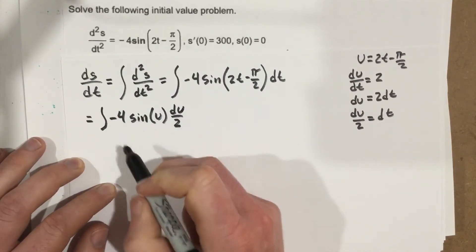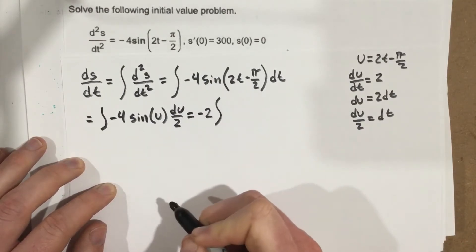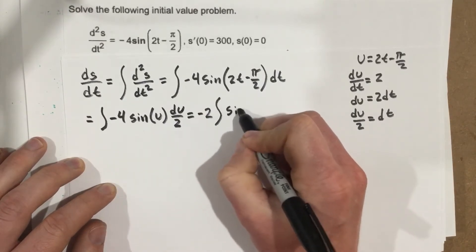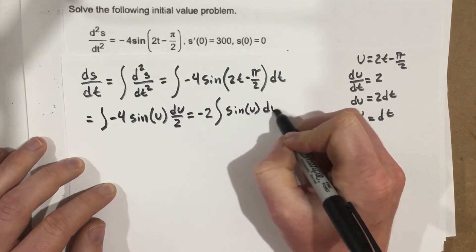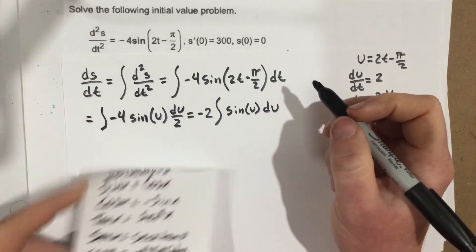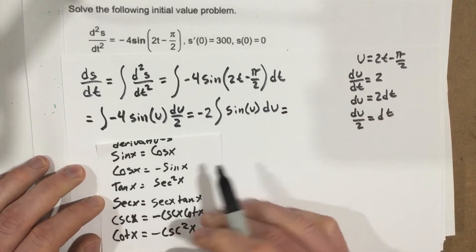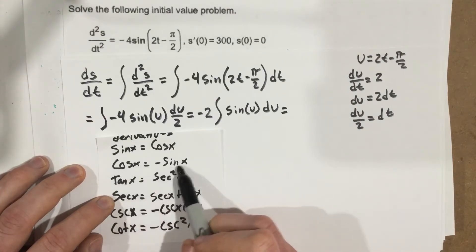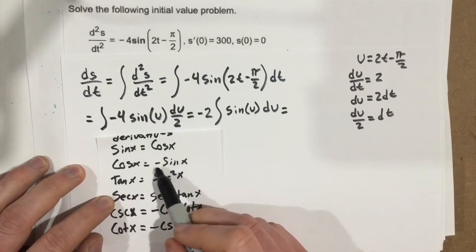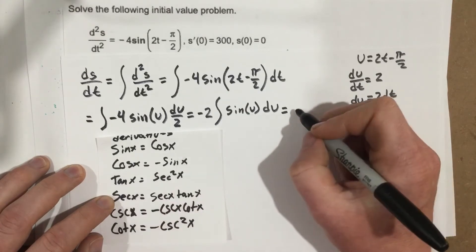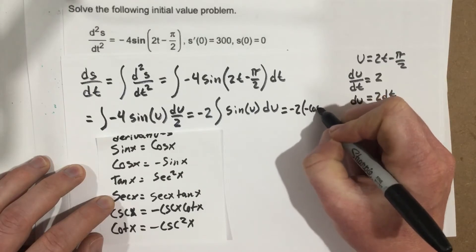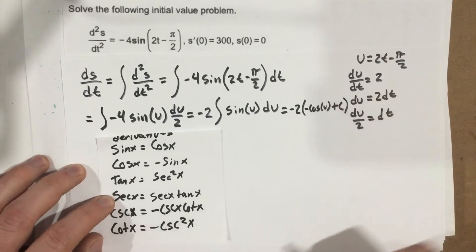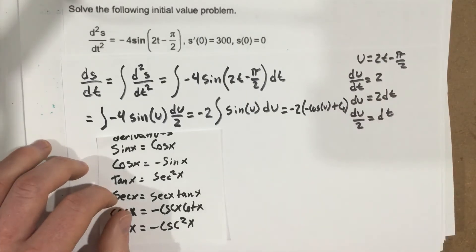The 2 in the denominator and the negative 4 combine to give negative 2, so I write that outside the integral: negative 2 times the integral of sine u du. Now integrating sine u — since the derivative of cosine is negative sine, the antiderivative of sine is negative cosine. So this gives me negative 2 times negative cosine u plus c1.